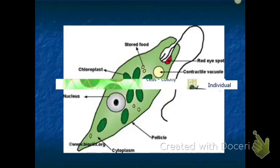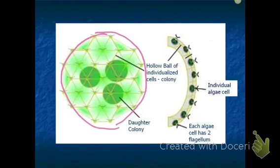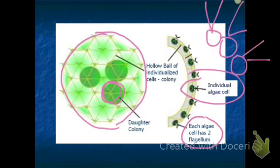The last organelle diagram is the volvox. Remember, it's individual green algae cells living together in a colony — a hollow sphere. Inside are daughter colonies. Each individual algae cell has two flagella, and together they form that sphere.